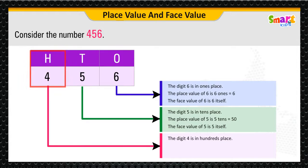The digit 4 is in hundreds place. The place value of 4 is 4 hundreds equals 400. The face value of 4 is 4 itself.